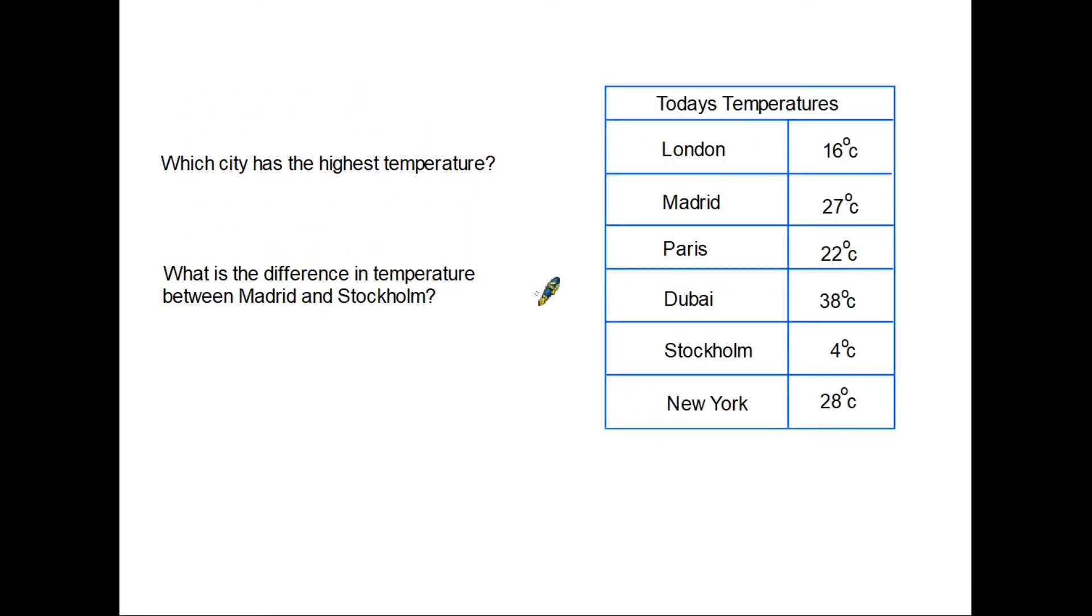It is also quite common to be given information about temperatures in a table such as the one we have here and you may be asked questions about the information that it gives. For instance it may ask which city has the highest temperature. Of course the highest number is the highest temperature so in this case you would give the answer of Dubai with 38 degrees Celsius.